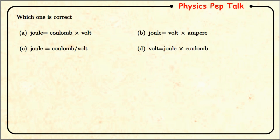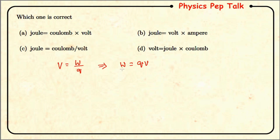Next question: which one is correct — joule = coulomb × volt, joule = volt × ampere, joule = coulomb per volt, or volt = joule × coulomb? Joule is a unit of work, coulomb is a unit of charge, and volt is a unit of potential difference. We know V = W/Q, so W = Q × V, meaning joule = coulomb × volt. Therefore option A, joule = coulomb × volt, is the correct answer.